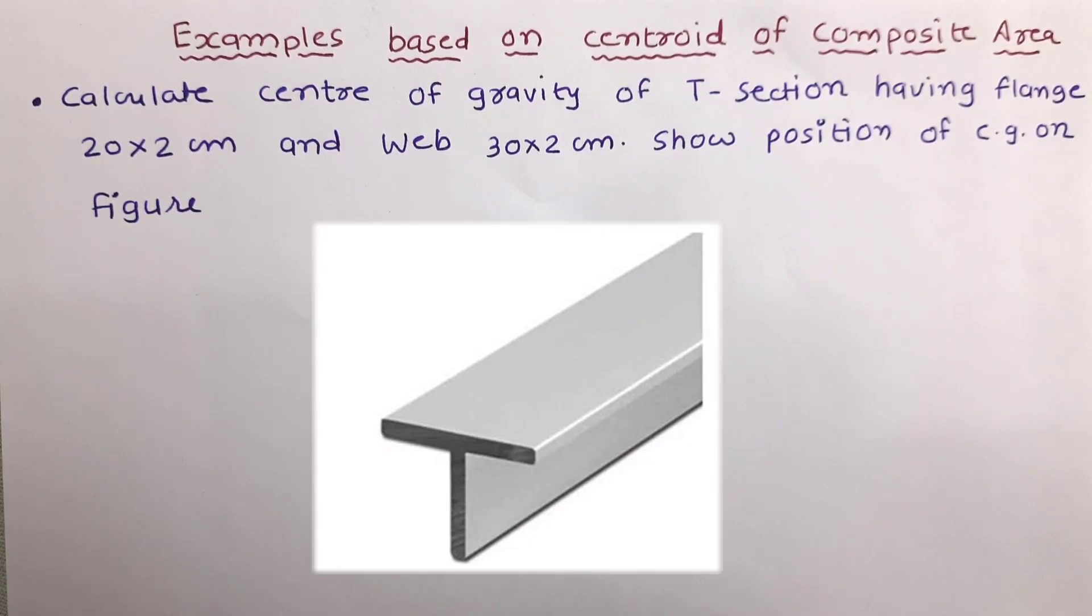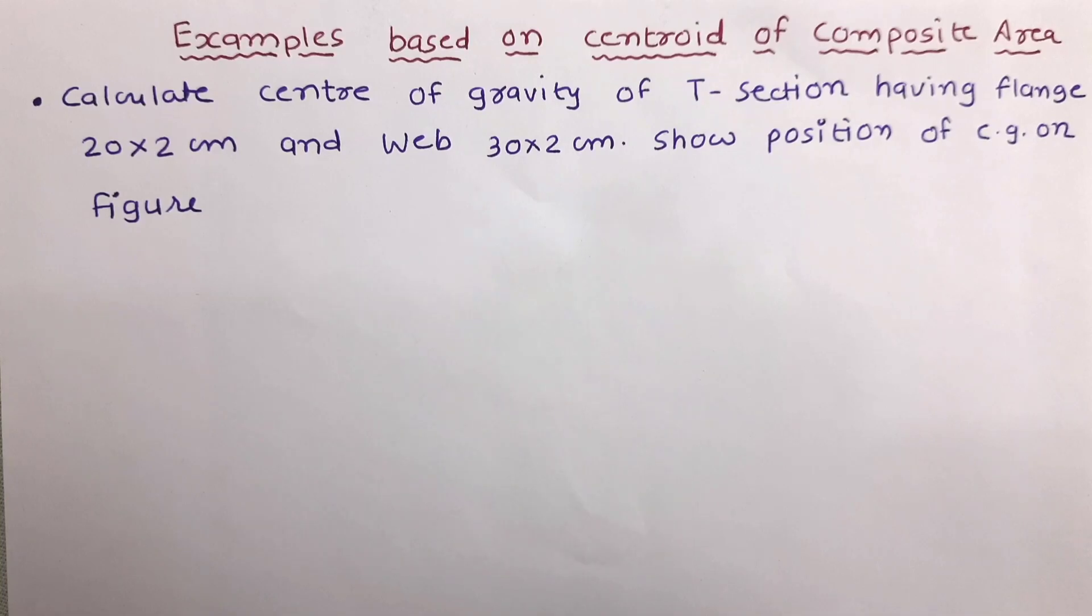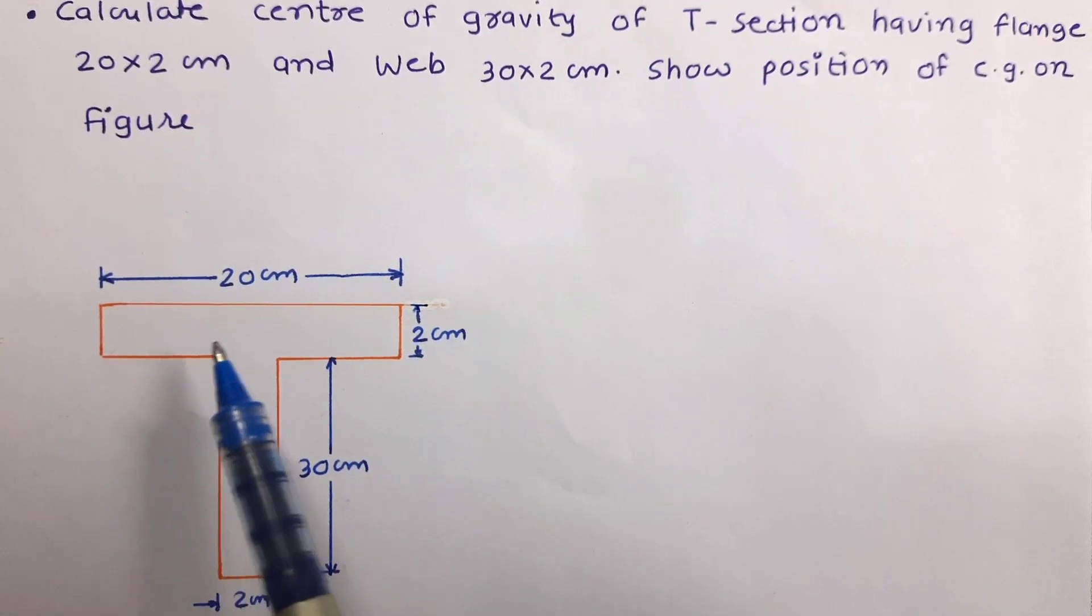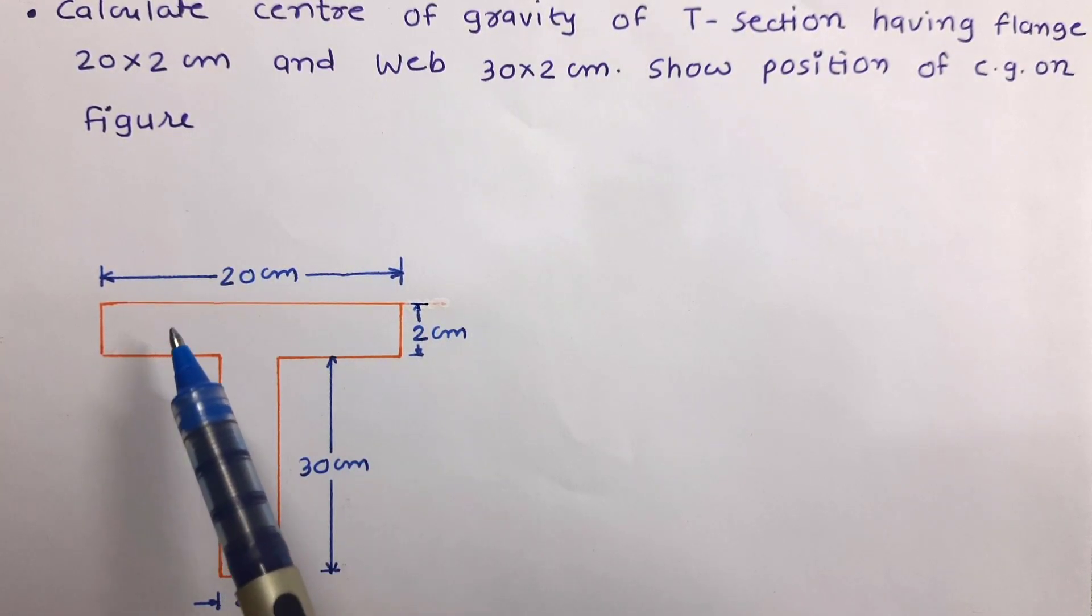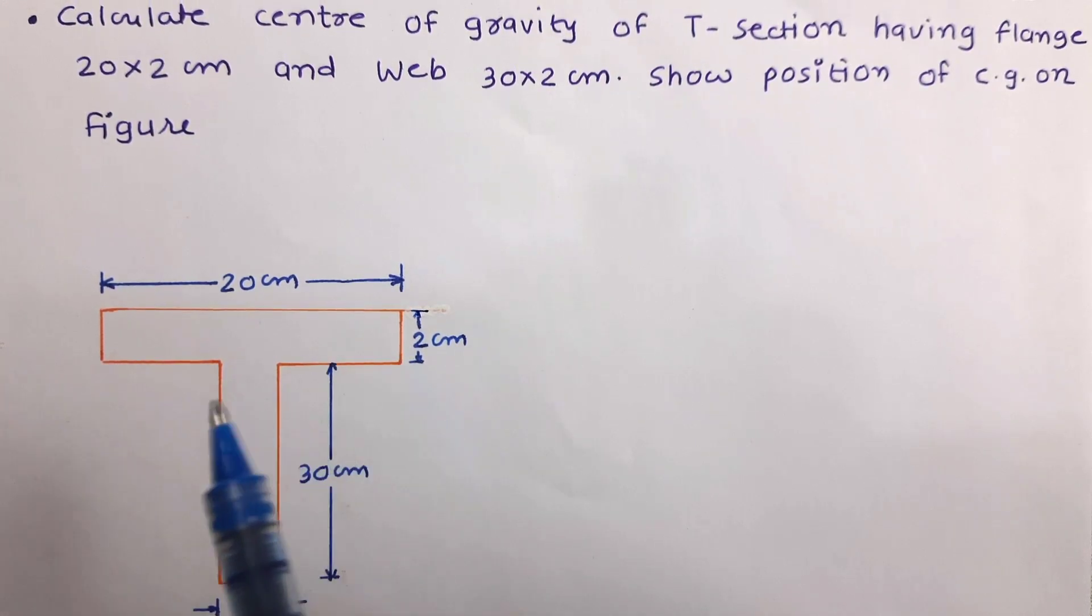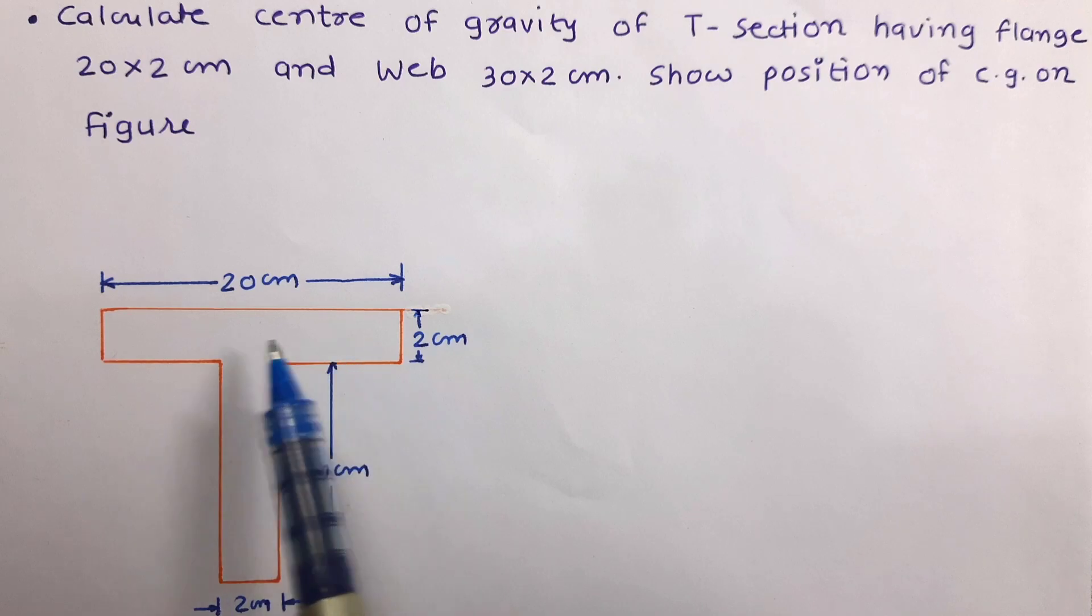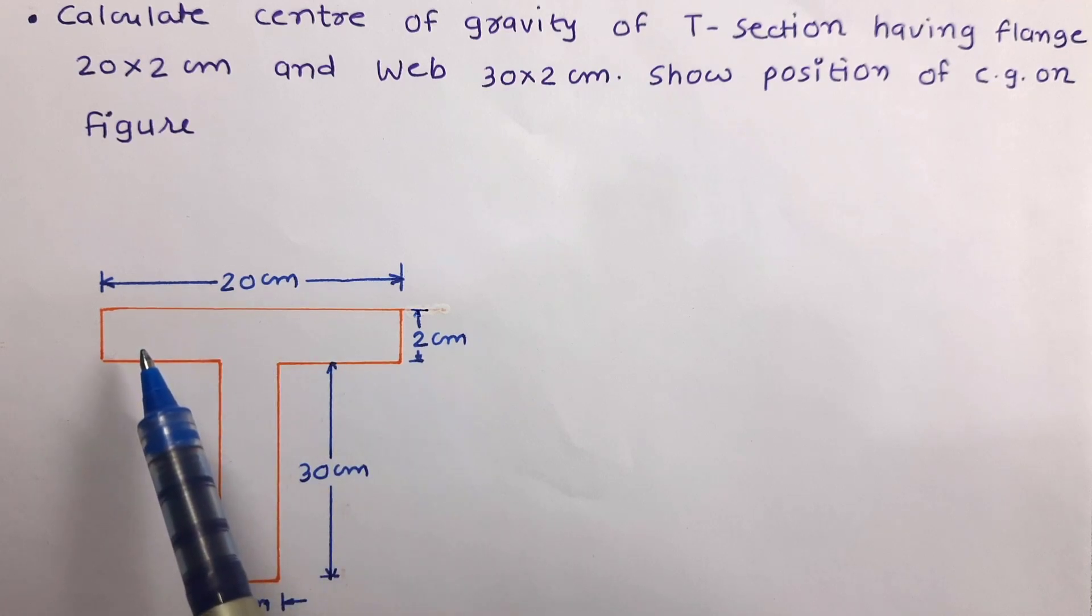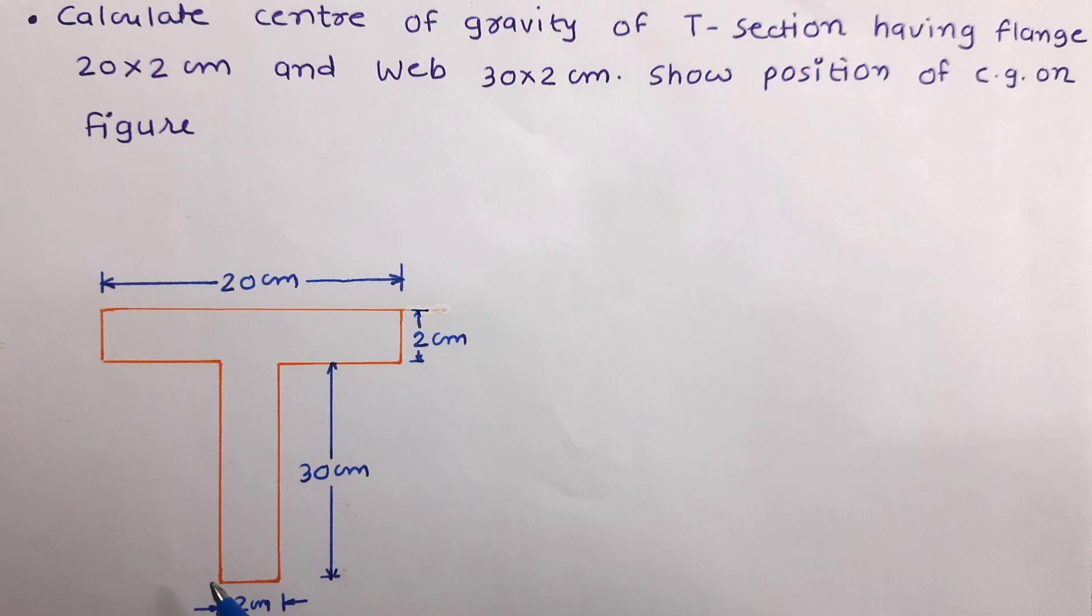So here we have given a T section and the dimension of web and flange are given. So let us draw the figure first. So here the figure has been drawn. This is the flange having dimension 20 cm by 2 cm. We know that in such section, the horizontal portion is flange and this vertical portion is web and the dimension of web given in the problem is 30 cm by 2 cm. So this is the figure given to us.